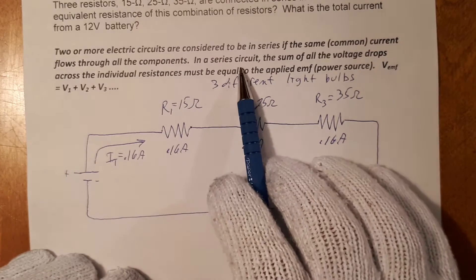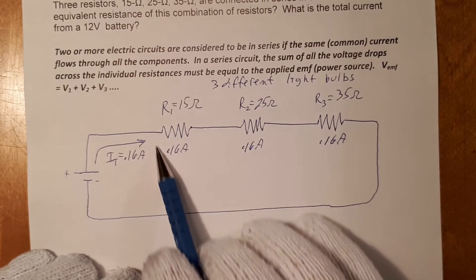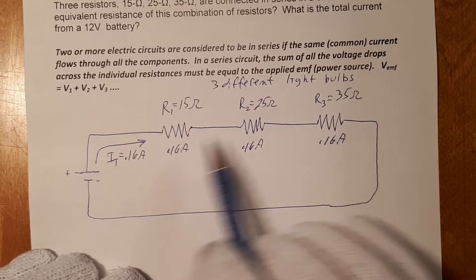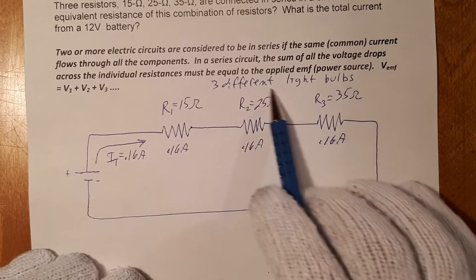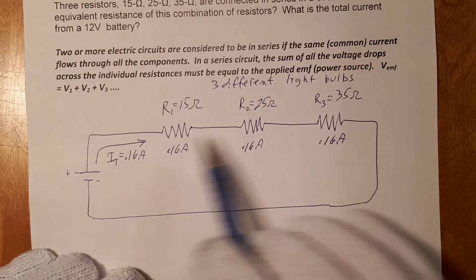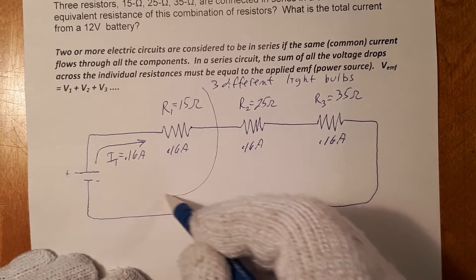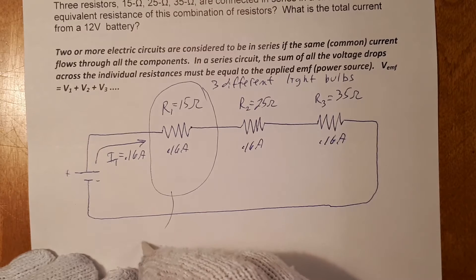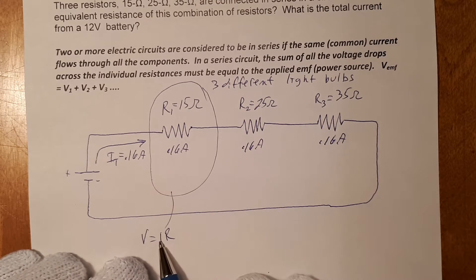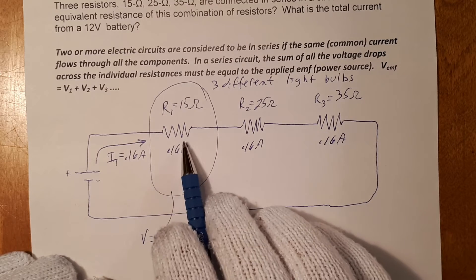And it also says here in a series circuit the sum of all the voltage drops. And the voltage drops is the amount of voltage being used by this supposed light bulb, and the amount of voltage being used by this light bulb. We can separate these into three separate little problems using Ohm's law. So separating this one, and using Ohm's law, we can calculate what the voltage drop is here. We know the current, 0.16 amps. We know the resistance.